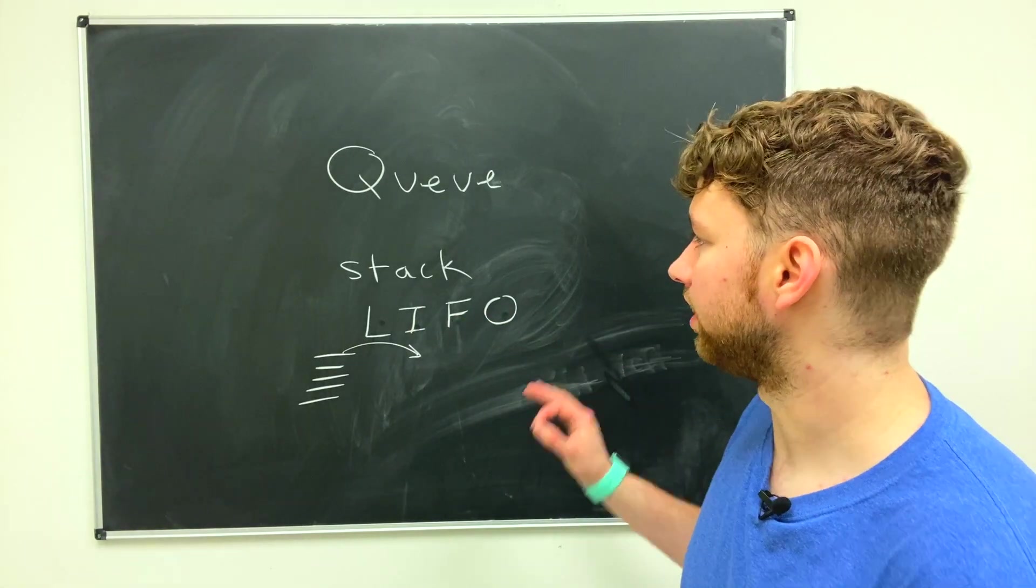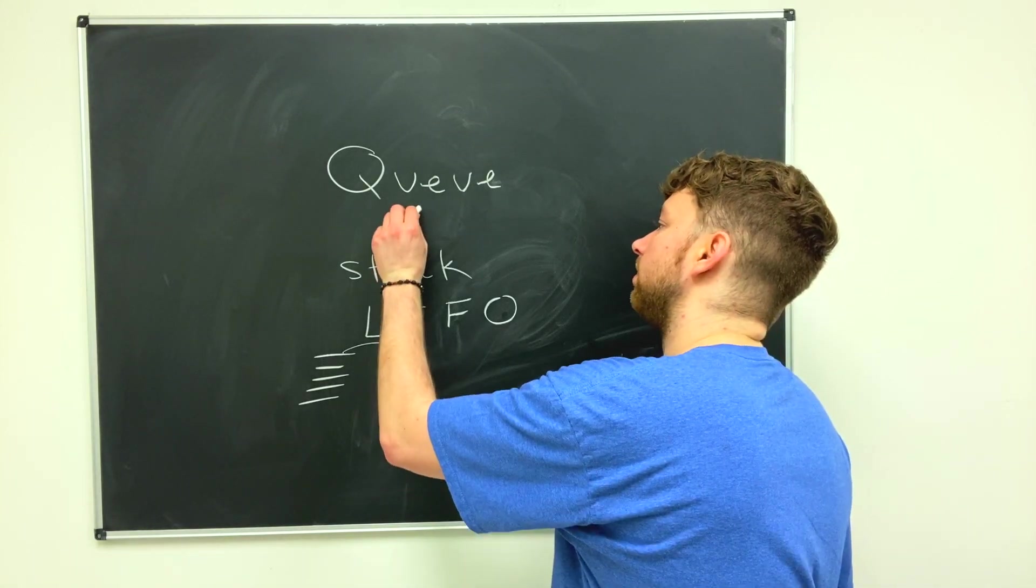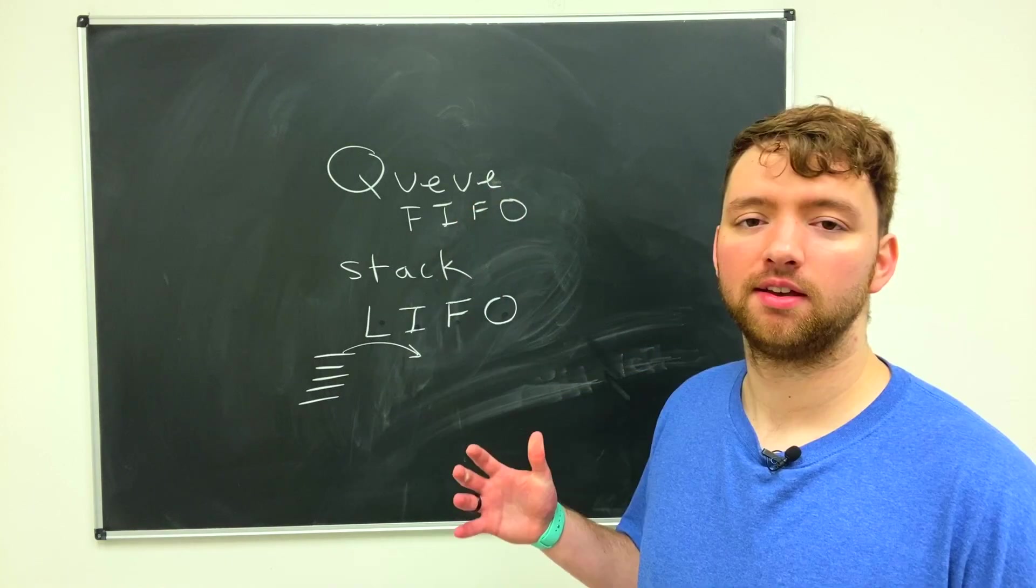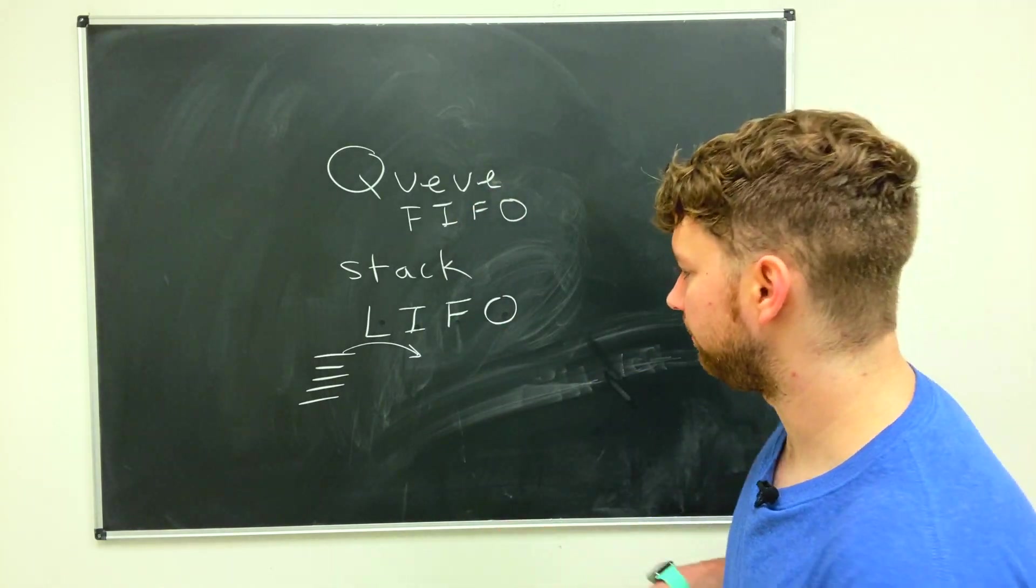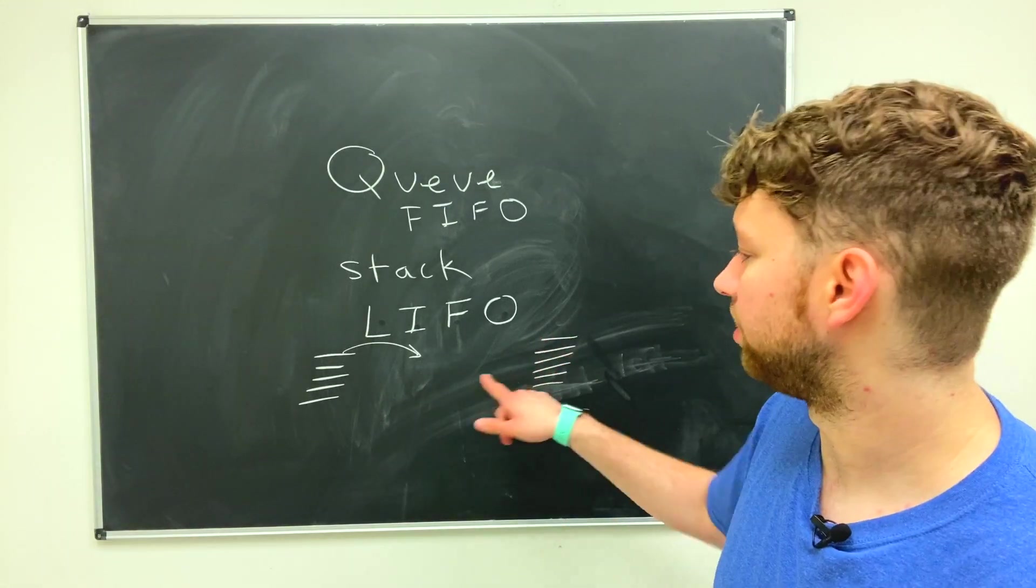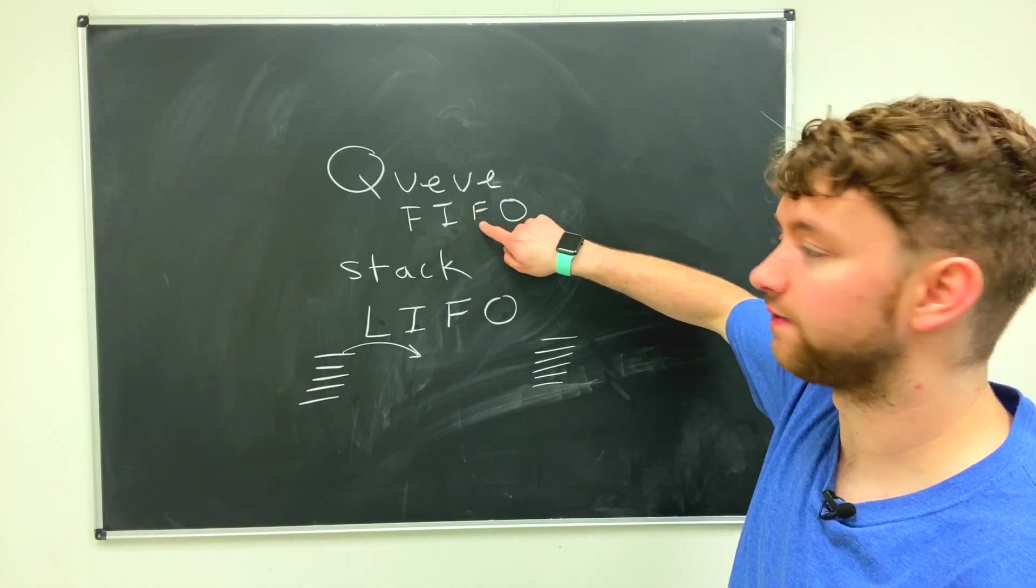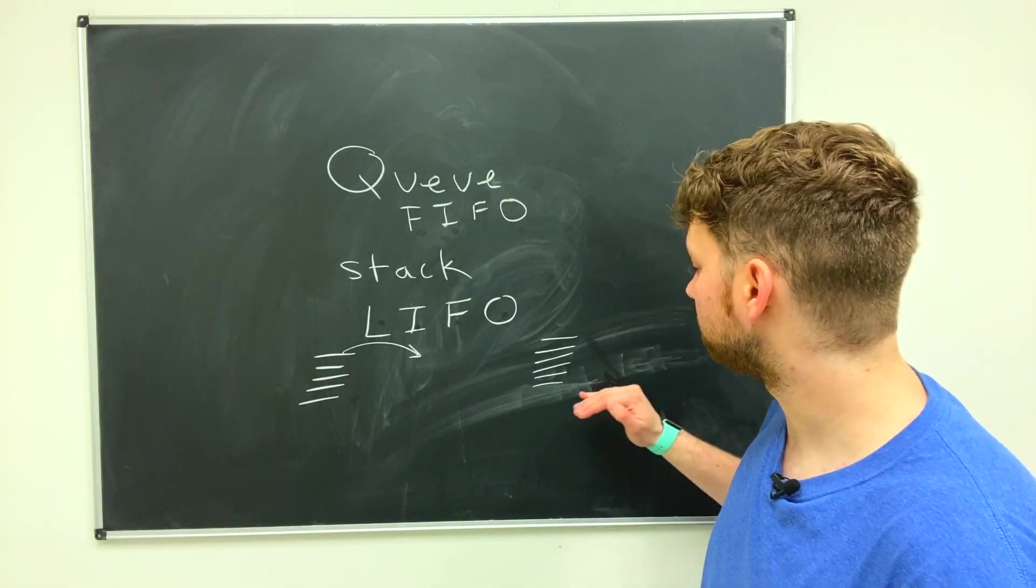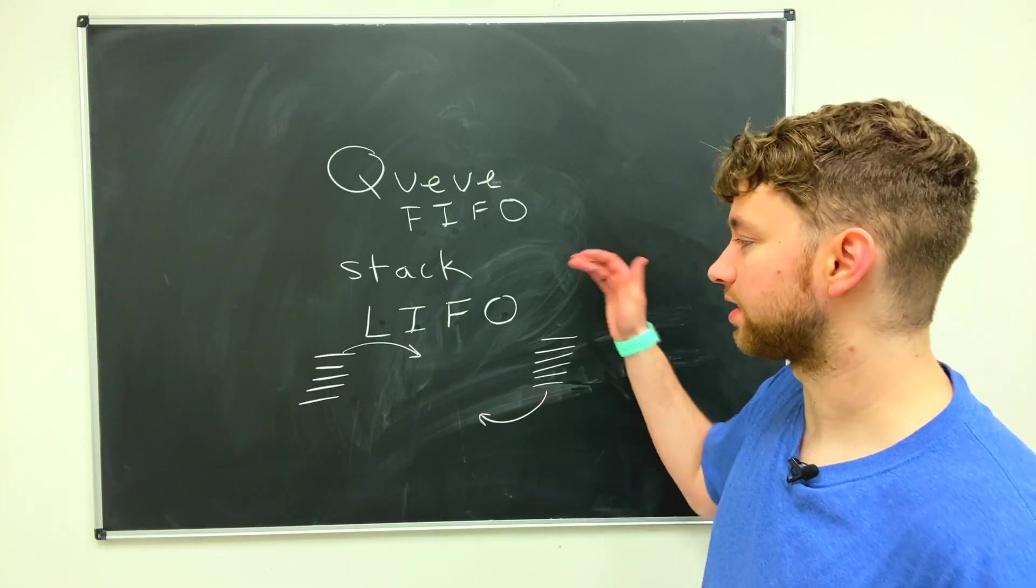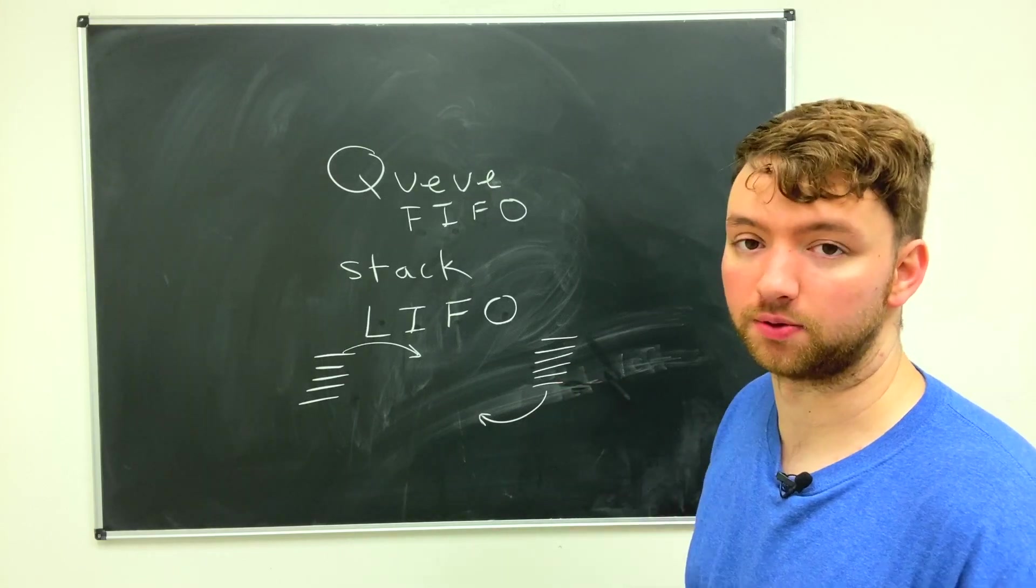So queues are different in that they are first in first out or FIFO. The way a queue works is if you were adding these in a similar way that you did with the stack, the first one in is the first one out. That first one placed in is going to be removed first. So for a stack the last one is the first one out. For a queue the first one in is the first one out.